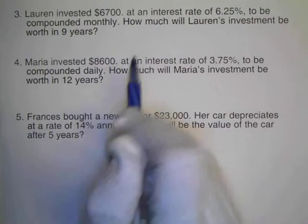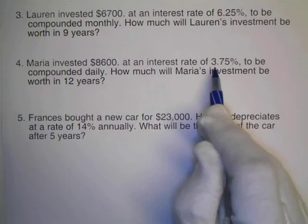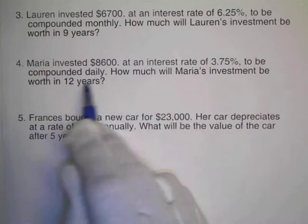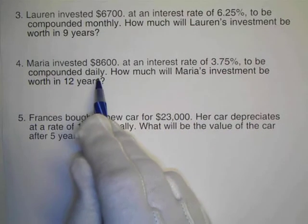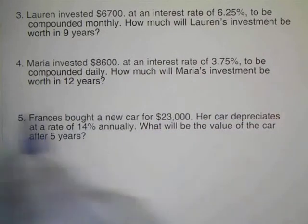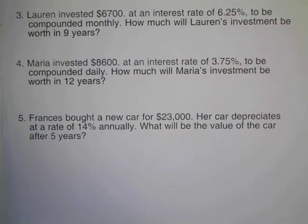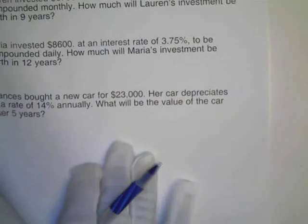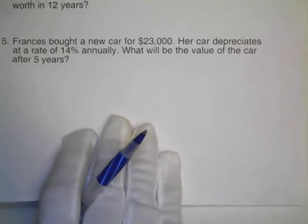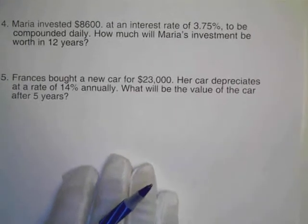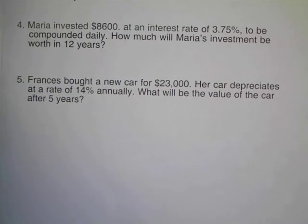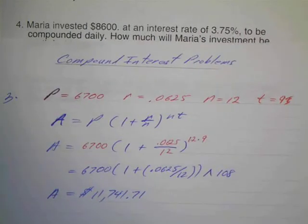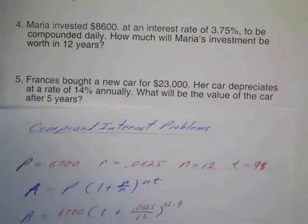Okay. Maria invested $8,600 at an interest rate of 3.75% to be compounded daily. How much will Maria's investment be worth in 12 years? All right. So if we look at our data, let's get this up a little bit higher here. There we go. If we look at our data here.